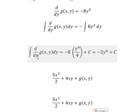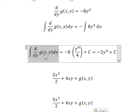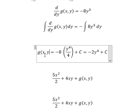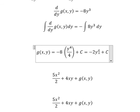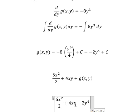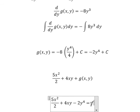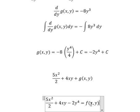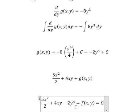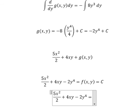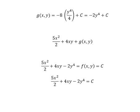We notice the integration gives us g(x,y), which equals 5x²/2 + 4xy + g(x,y). We know that everything here equals f(x,y), and f(x,y) equals C. So this equals C. This is the end, thank you for watching.